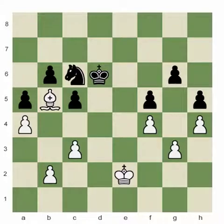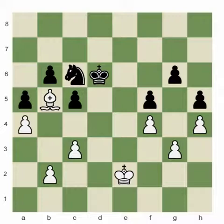Knight endings — meaning knight versus knight. Believe it or not, besides the activity of the king and pawns, the general rule you should apply is exactly the same as in pawn endings: same outside passed pawns, two unconnected passed pawns on each side of the board.